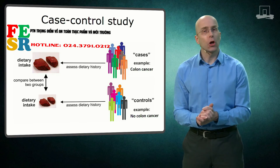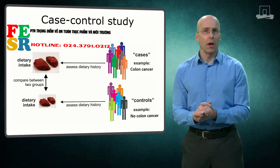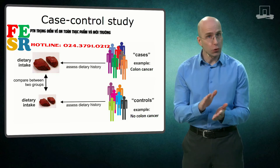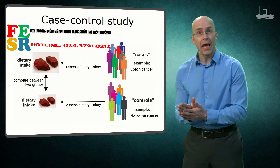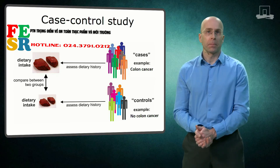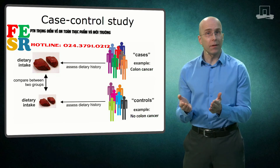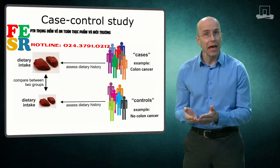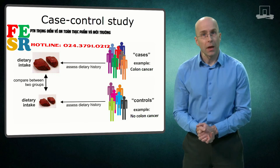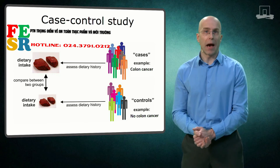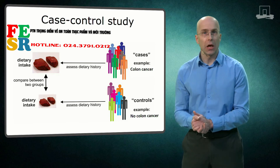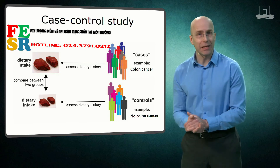Another source of bias is called recall bias. Recall bias happens when there are systematic differences between the cases and controls in the way they remember or report their dietary intake. It's well known that people affected by a disease have a different recollection of the past than people that are healthy. Therefore, to minimize recall bias, it's best to use a control group that has a different disease unrelated to the disease being studied.